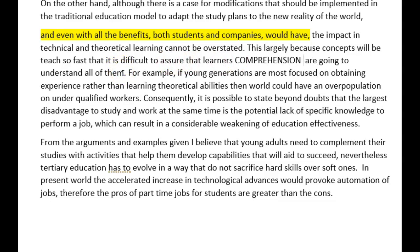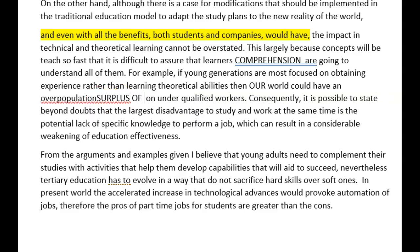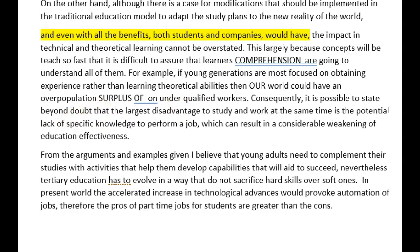For example, if younger generations are most focused on obtaining experience rather than learning theoretical abilities, then our world could have a surplus of underqualified workers. Consequently, it's possible to state beyond doubt — usually 'doubt' would be singular, not plural — that the larger disability to study and work at the same time is a potential lack of specific knowledge to perform a job, which can result in a weakening of education's effectiveness.